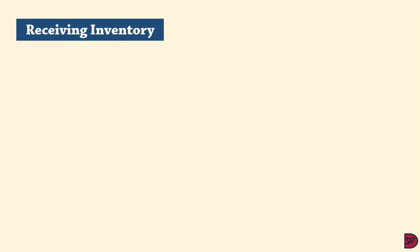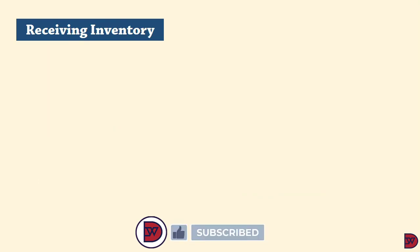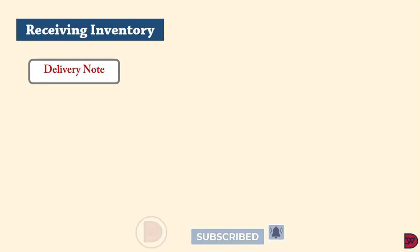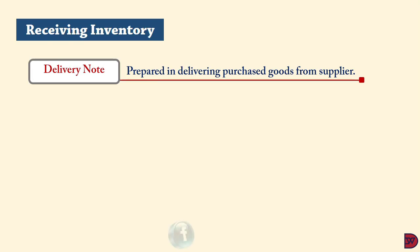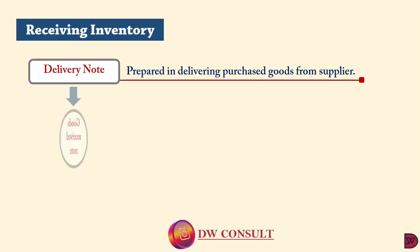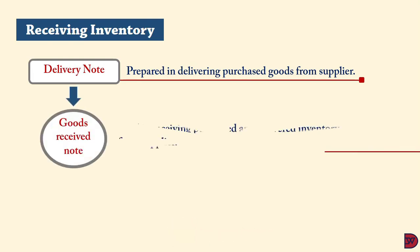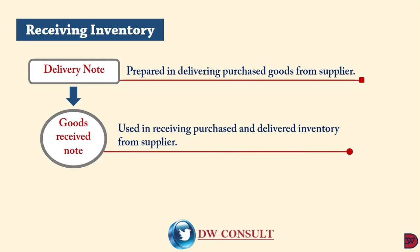Moving on to receiving inventory from the supplier: when the supplier delivers the goods, they will prepare a delivery note to accompany the inventory, detailing what has been delivered. When the stores department takes custody of the goods, they prepare the goods received notes, issued after cross-checking the delivered goods against the purchase order and delivery notes, to ensure supply is exact. Copies are sent to the purchasing and accounting departments.